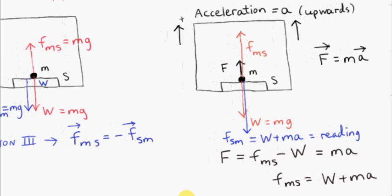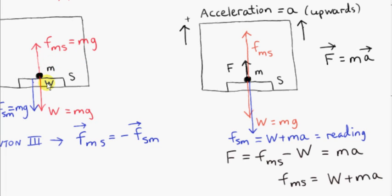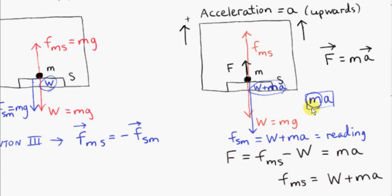In this situation the scales will give a greater reading than when the acceleration of the elevator was zero. The reading on the scales will be greater by the amount MA — the mass of the particle times the acceleration of the elevator. This gives us a way to find the acceleration of the elevator: the weight of the object never changes, so by looking at the difference in readings and dividing by the mass, we can work out the acceleration.